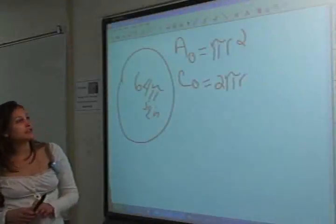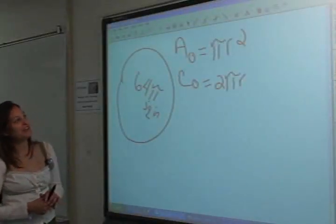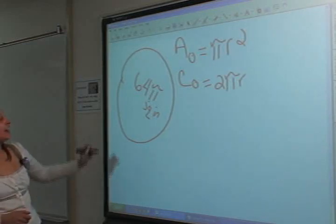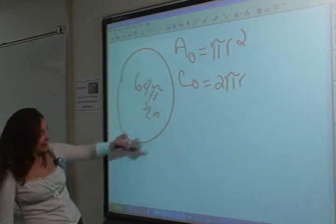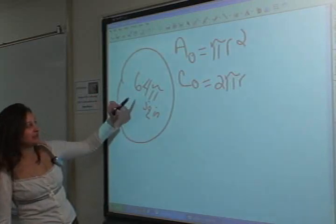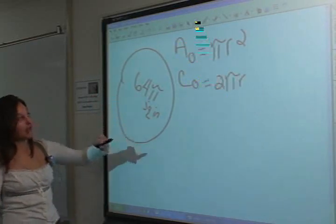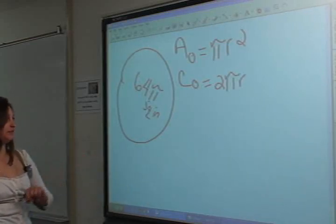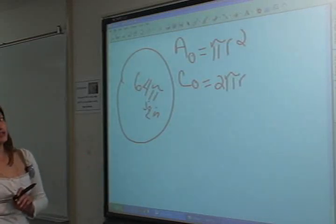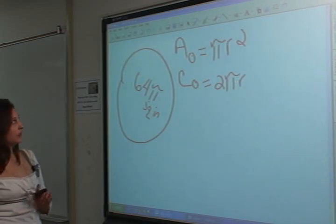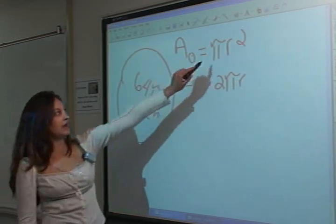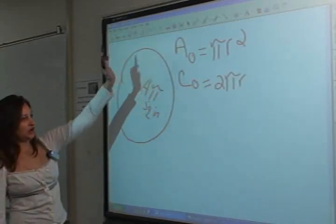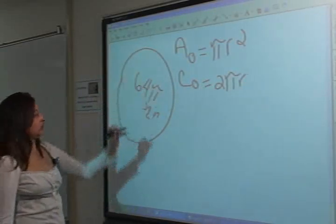Hey guys, today we have a little circle formula for you. Here we have the area of the whole entire circle, which is 64 pi square inches, and what we want to do is find the circumference of the circle. So the first thing we need to do is use our area formula, which is pi radius squared.